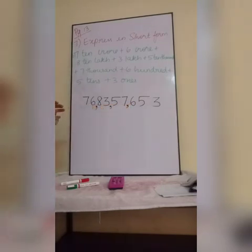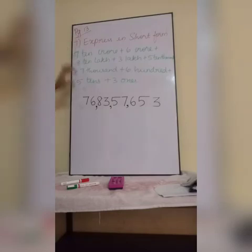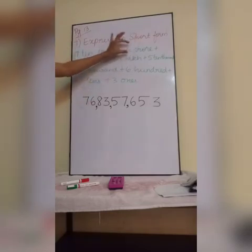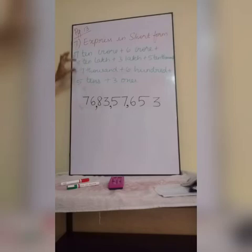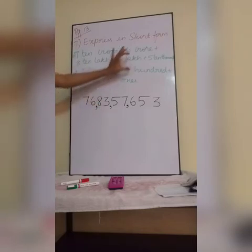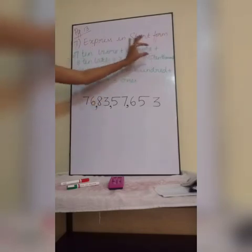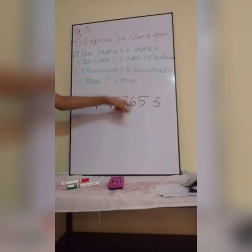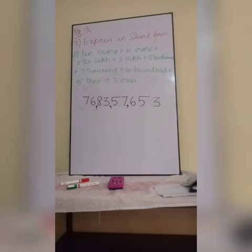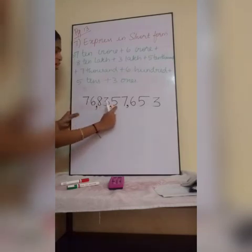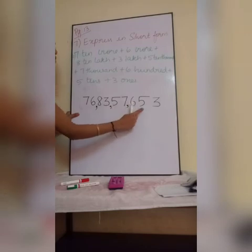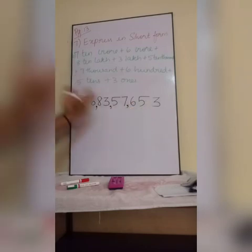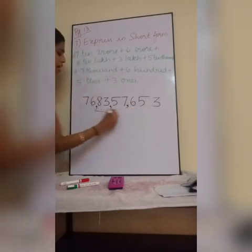So listen to this problem. 10 crore portion — wrote 7. After that crore — wrote 6. Then 10 lakh — wrote 8. Lakh — wrote 3. 10,000 — wrote 5. 1,000 — wrote 7. 100 — wrote 6. 10 — wrote 5. 1 — wrote 3. So the answer is 76 crore, 83 lakh, 57,653. This is the short form for this question. Understood?